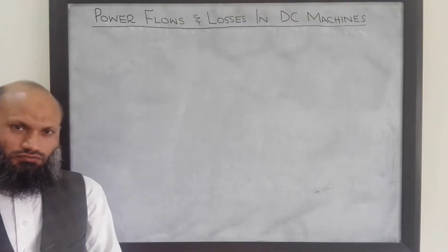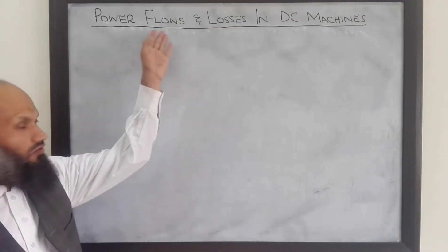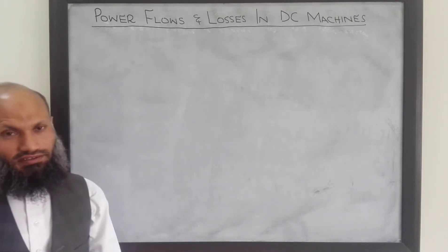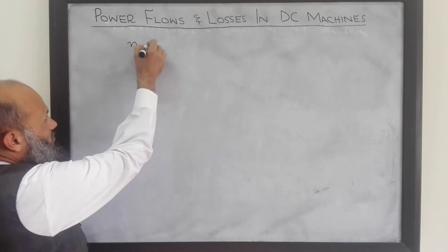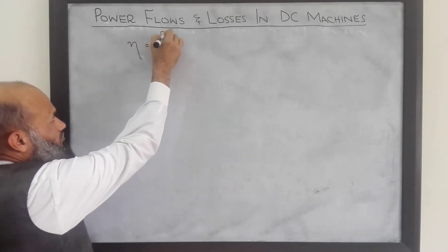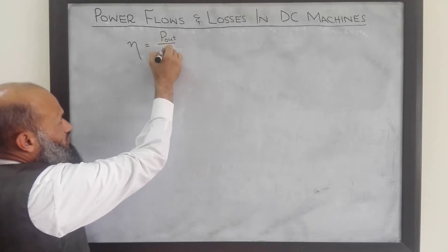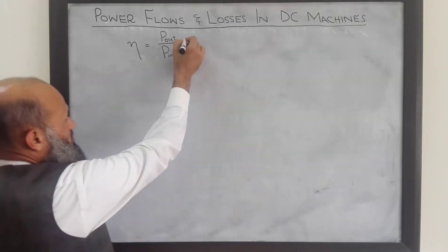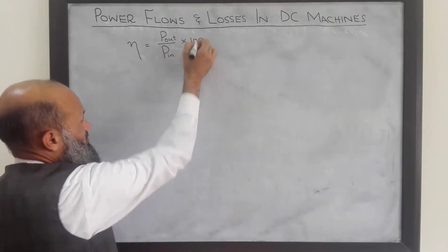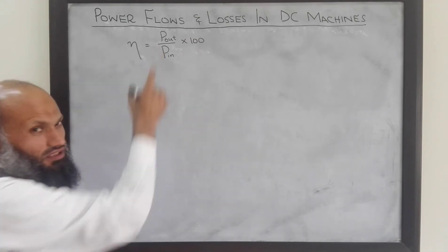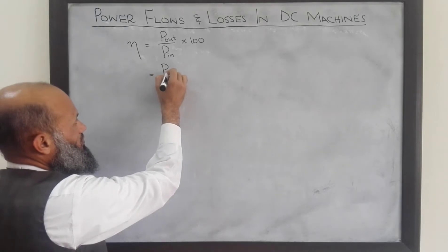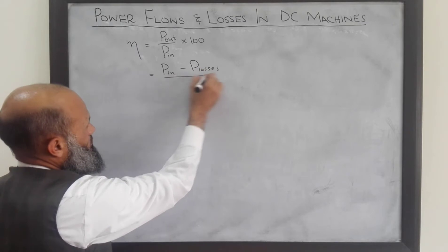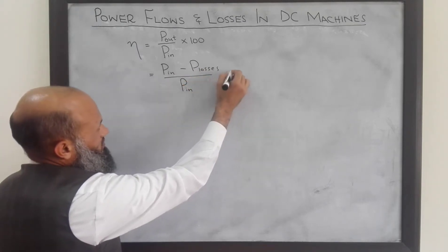Assalamu alaikum. In today's lecture, we shall talk about the power flows and losses in DC machines. The efficiency of a machine, denoted by eta, is given by the output power divided by the input power supplied to that machine. For percent efficiency, we multiply by 100. The output power equals the input power minus the losses in the machine.